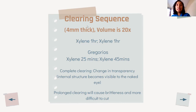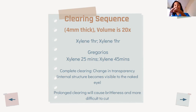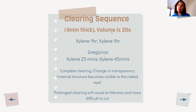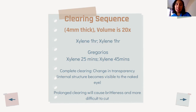For the clearing sequence, if the tissue is only 4mm thick and routine in the laboratory, we use two changes of xylene: one hour in the first xylene to remove the alcohol, and one hour in the second change for a cleaner final result. The volume must be 20 times the tissue. For fixation, 20 times is recommended; for dehydration, at least 10 times; and for clearing, 20 times, though more is better to ensure complete penetration and submersion.